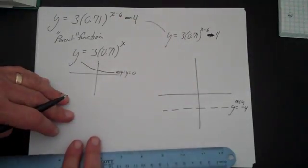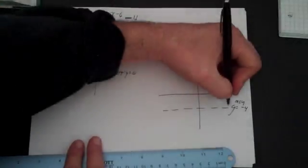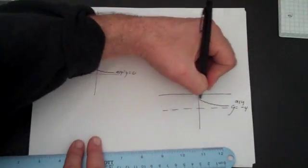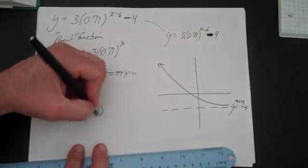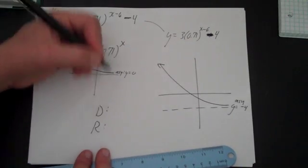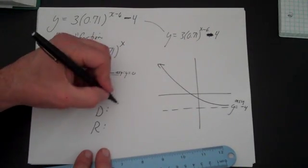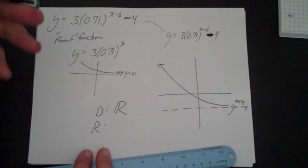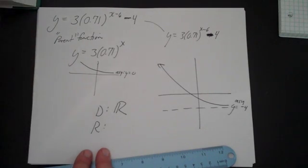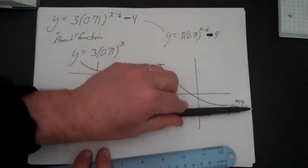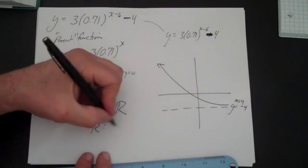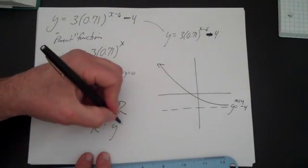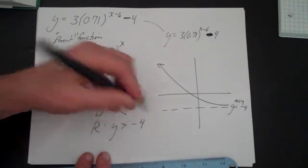It's exponential decay, so the graph roughly approaches the asymptote from above. The domain is all real numbers — because it's always all real numbers. And the range is defined by the asymptote; in this case everything bigger than −4, so y is greater than −4.